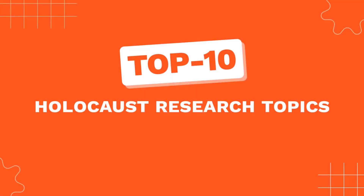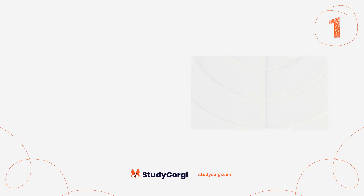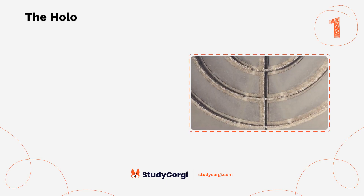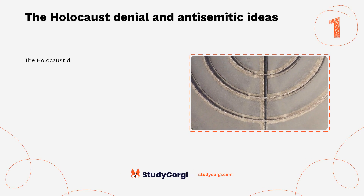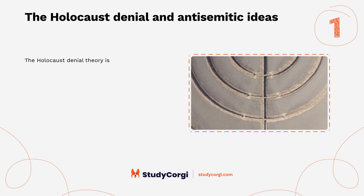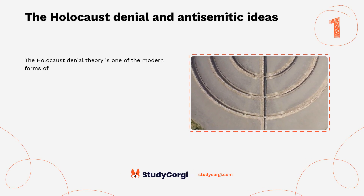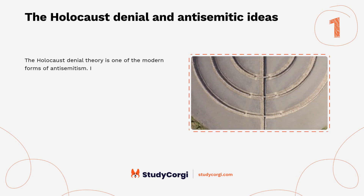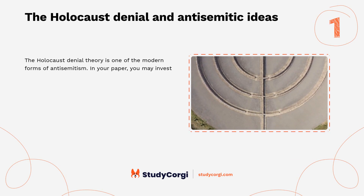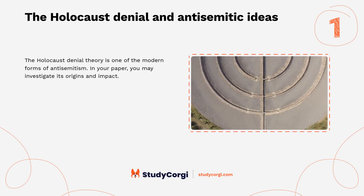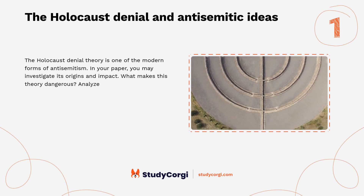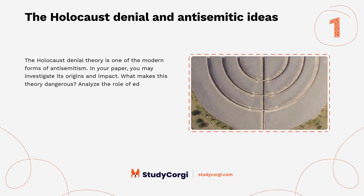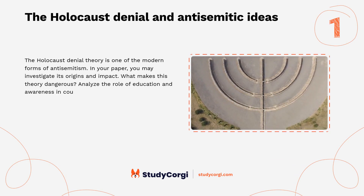Top 10 Holocaust research topics. Holocaust denial and antisemitic ideas: Holocaust denial theory is one of the modern forms of antisemitism. In your paper, you may investigate its origins and impact, what makes this theory dangerous, and analyze the role of education and awareness in countering this idea.